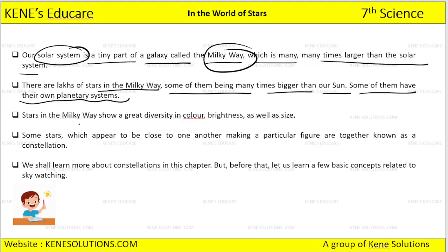Stars in the Milky Way show great diversity in color, brightness, as well as in size. The size of the stars, the brightness, and the color all remain different from one another.